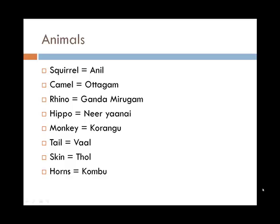Tail generally refers to vaal — it's a general term for tail. Skin is tol. And horns is kumbha. So these are of course parts of the animal.